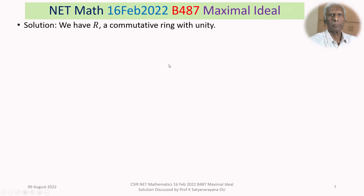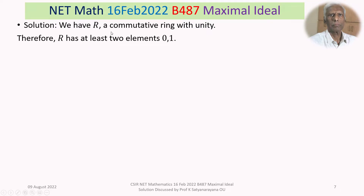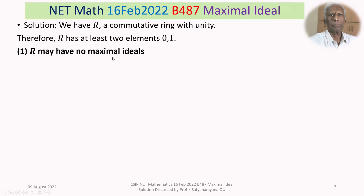We have R, a commutative ring with unity. Since it is a ring, it has at least the element zero, and it has a unity, therefore R has at least two elements: zero and one. So it is a non-zero ring. Now let us examine option 1: R may have no maximal ideals. If we can show that there exists some maximal ideal, then this statement is false.